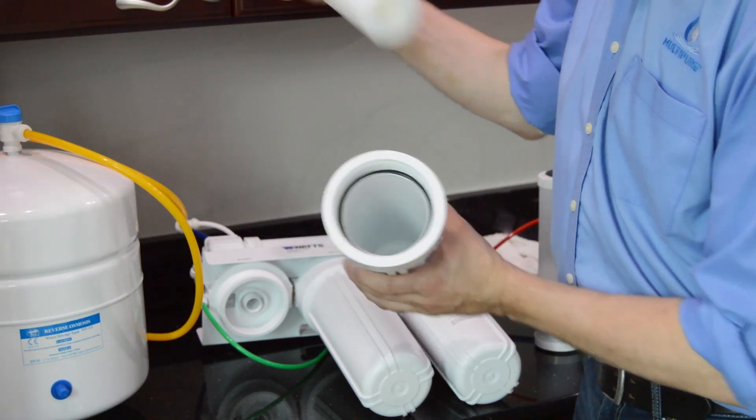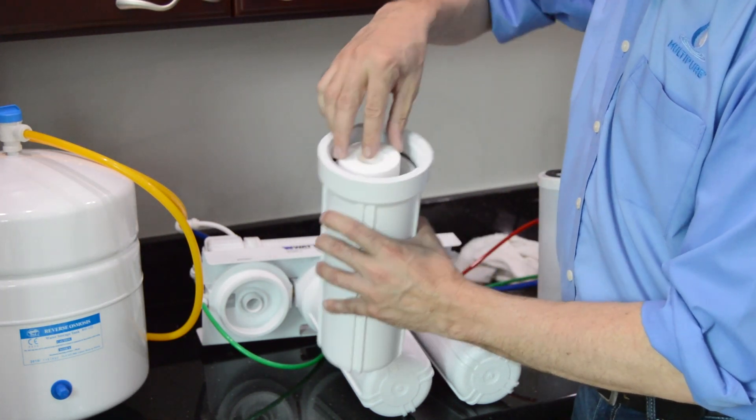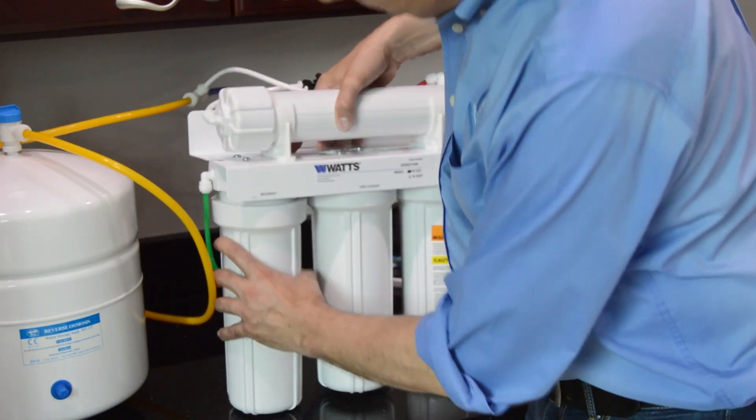Make sure the hole in the filter aligns with the nipple at the bottom of the housing. Reconnect the sediment pre-filter housing to the system.